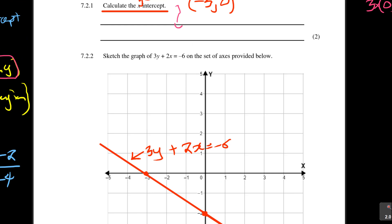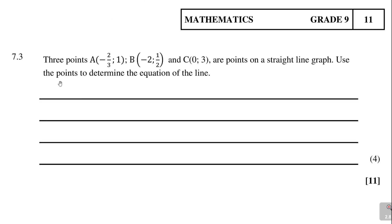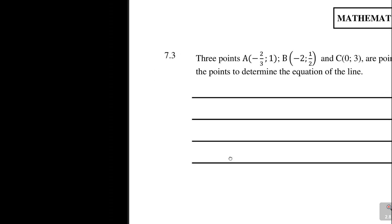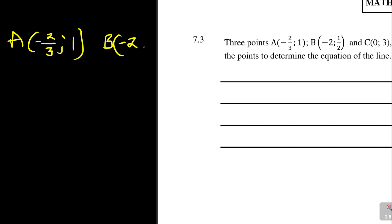It's not difficult, but it's very important to get all your marks. Now let's move on to the other question, which is still on graphs. It says 3 points A, B, and C are points on a straight line graph. Use the points to determine the equation of a line graph. Let's take it nice and easy. We have A being negative 2 over 3 and 1. Then we've got B being minus 2 and a half. And C is 0 and 3.